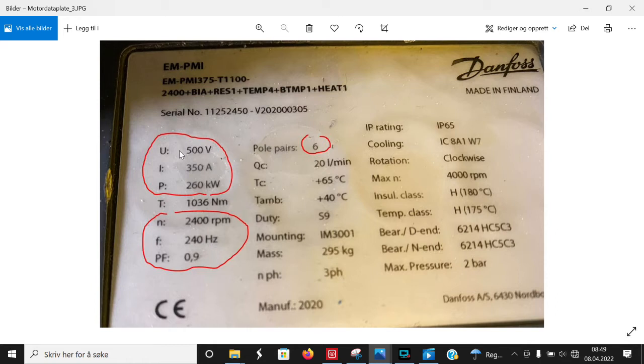Here we see the nominal voltage is 500V at 2400 RPM and 240 Hz which gives a pole pair number of 6.